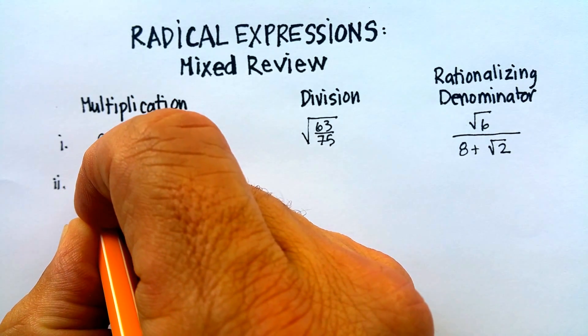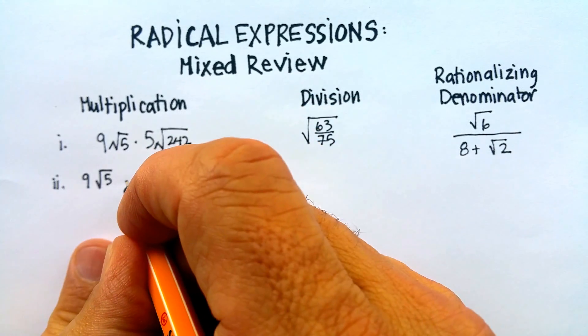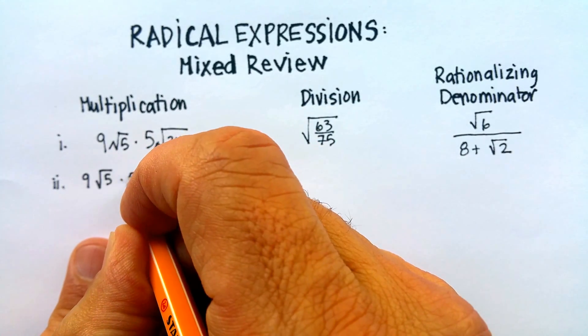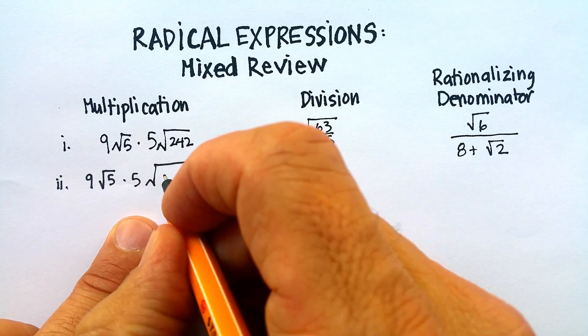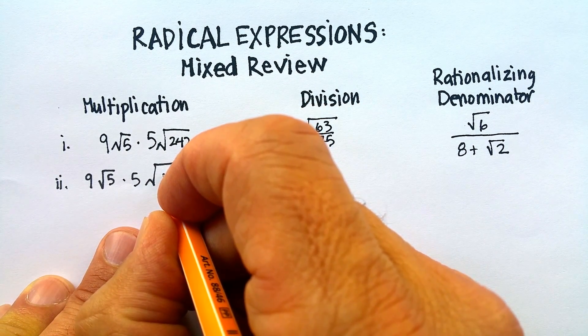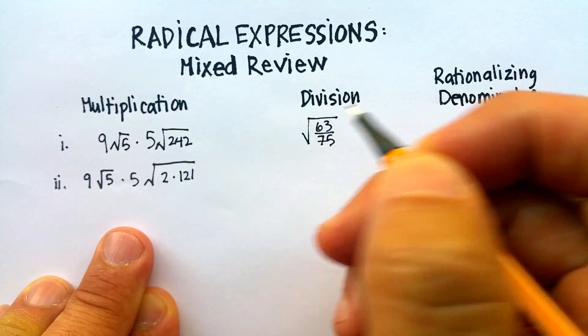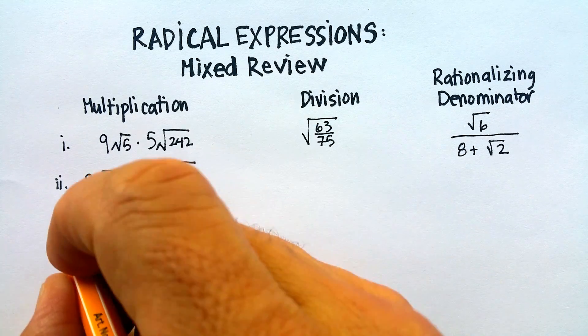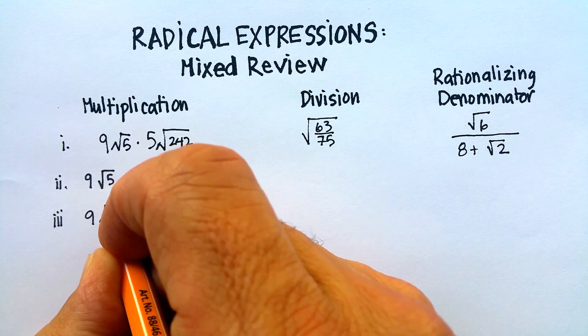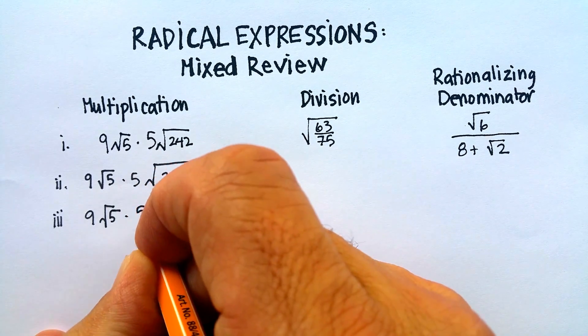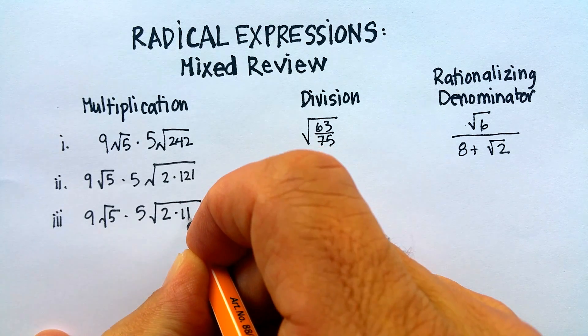So 9 radical 5 basically just stays as 9 radical 5 since 5 is already a prime factor. And then 242 is just 2 times 121 or 2 times 11 squared because 11 times 11 is 121. So I'm just going to rewrite that again as 9 radical 5, 5 radical 2 times 11 squared.